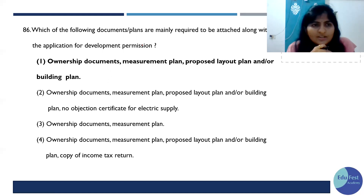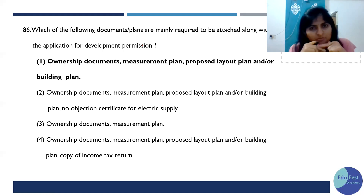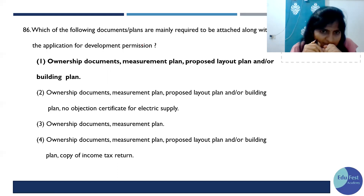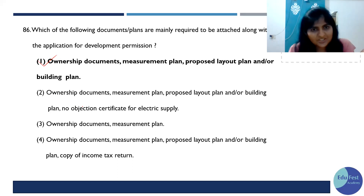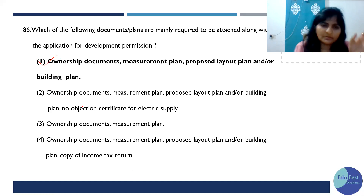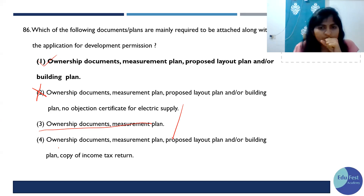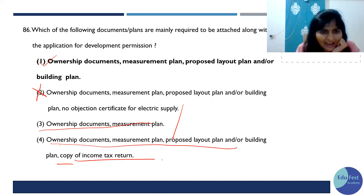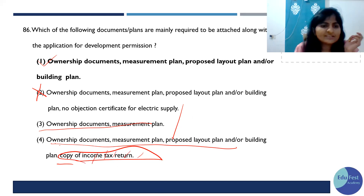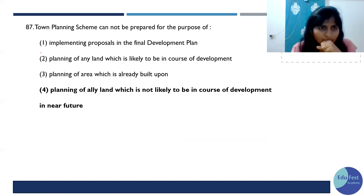Which of the following documents are mainly required to attach with the application for development permission? Ownership documents are needed, measurement plan is needed, layout plan and building plans are needed. The second option: no objection certificate for electric supply is not required for development permission — so that is no. The correct option includes ownership documents, measurement plan, layout plan, and building plan. An idea return is not required. So the answer is option 1.